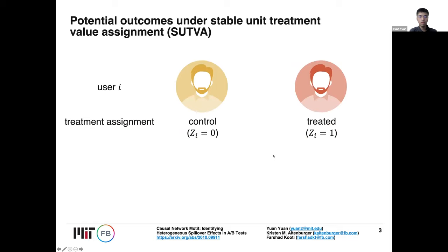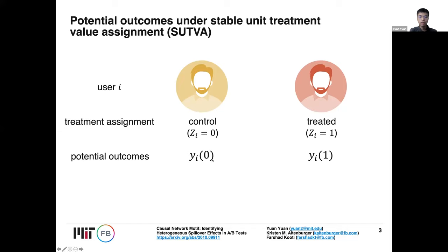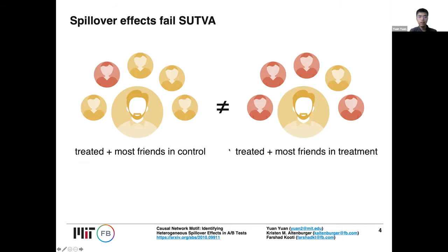When we talk about A-B testing, we typically examine the data under the potential outcomes framework. There is a strong assumption called the Stable Unit Treatment Value Assignment, or SUTVA. Under this framework, we assume that there is a binary treatment and for each treatment there is a potential outcome — if the person were to be treated, the outcome is y0, otherwise it's y1. Then the outcome is like choosing between these potential outcomes. However, if there is a spillover effect, this SUTVA assumption does not hold anymore.